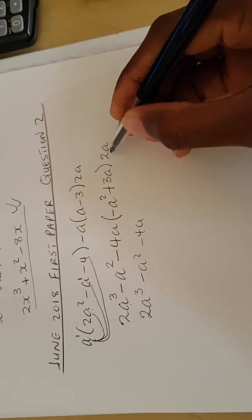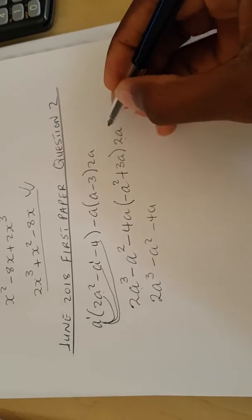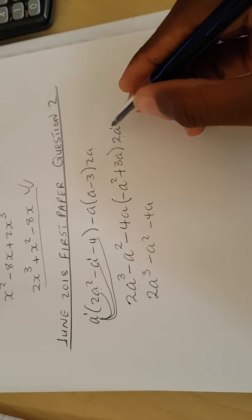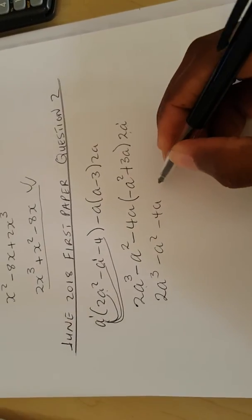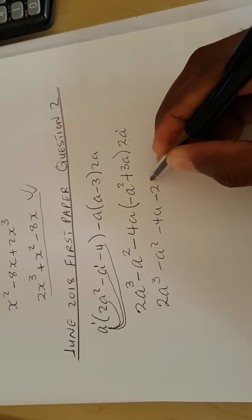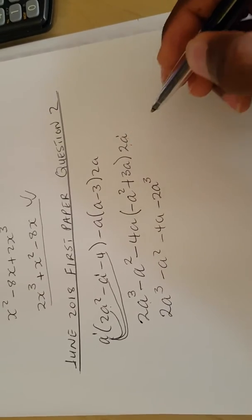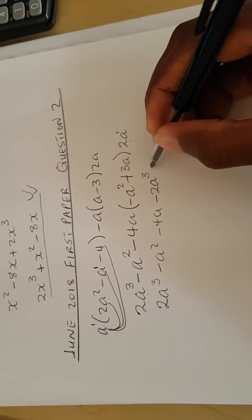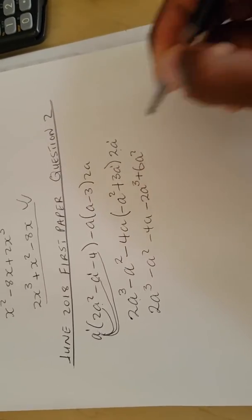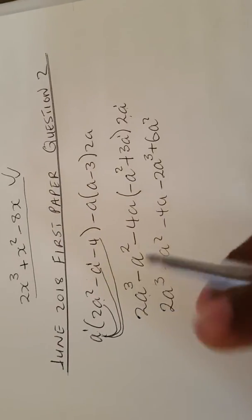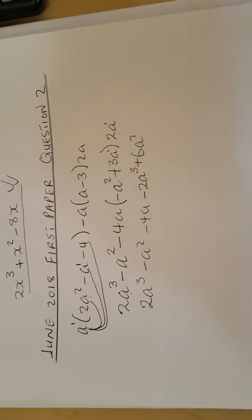The first bracket terms remain the same: 2a cubed minus a squared minus 4a. Now multiplying by 2a: 2a times negative a squared — there is an invisible one here, so we add the exponent 2 — giving negative 2a to the power of 3. Then 2a times positive 3a gives positive 6a squared. After clearing the brackets, we group the like terms.